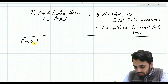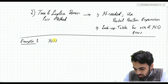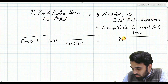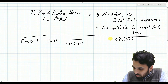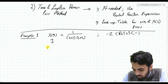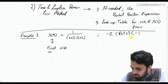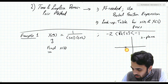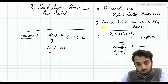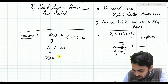Let us look at a couple of examples. In the first example, X(s) equals 1 over (s+1)(s+2), with the region of convergence such that the real part of s is bounded between −2 and −1. We are asked to find x(t). As a first step we take the partial fraction expansion, writing X(s) as A over (s+1) plus B over (s+2).